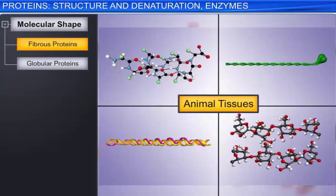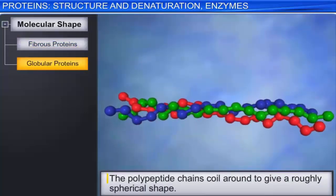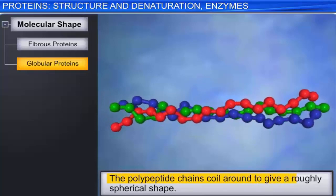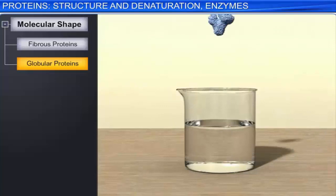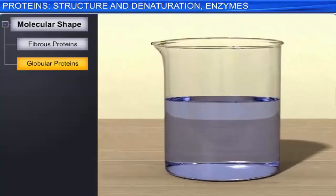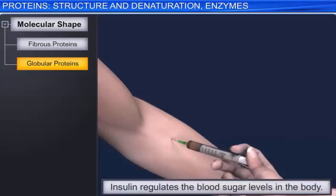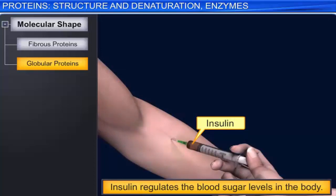In globular proteins, the polypeptide chains coil around to give a roughly spherical shape. These are soluble in water due to the presence of hydrophilic groups. Globular proteins maintain and regulate life processes. For example, insulin regulates the blood sugar levels in the body. Hemoglobin and albumin are some other examples.